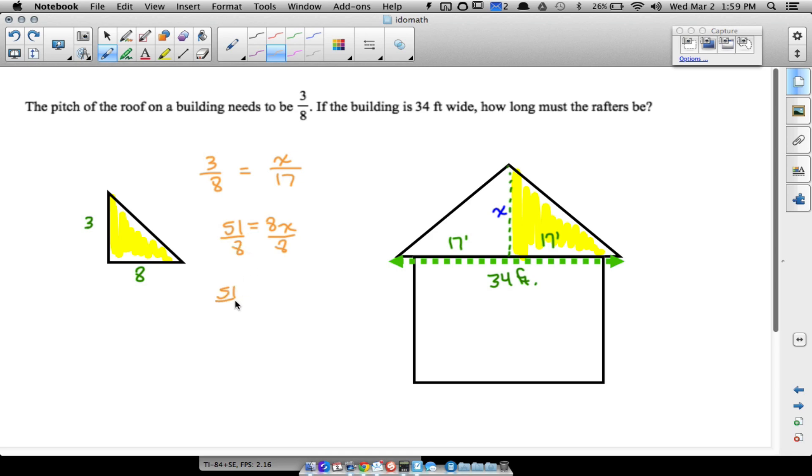Therefore I'll just leave it as 51 over 8 is equal to x, but actually if you do go ahead and divide that, it's not a bad decimal. We get 6.375 feet. So that's what this x is right here. I'm going to erase that now and I'm going to write 6.375 feet.